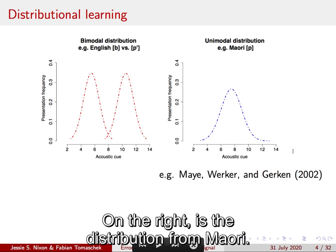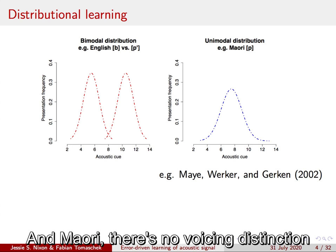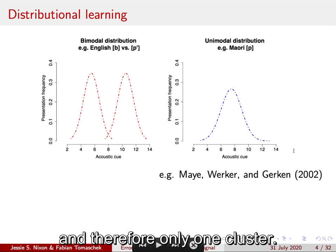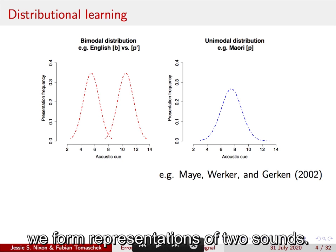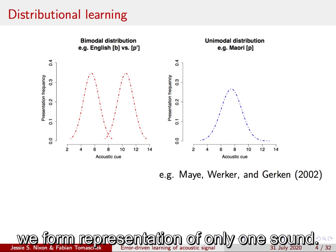On the right is the distribution for Māori. In Māori, there's no voicing distinction, so there's only one sound here and therefore only one cluster. According to distributional learning, if there are two clusters, we form representations of two sounds. If there's only one cluster, we form representation of only one sound.